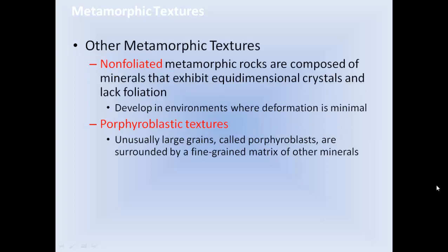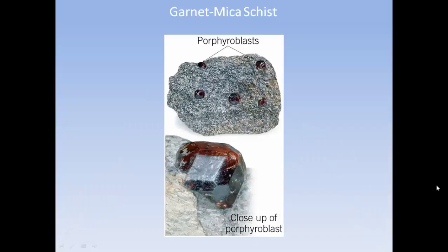Non-foliated metamorphic rocks are composed of minerals that exhibit equidimensional crystals and lack foliation. They develop in environments where deformation is minimal. Porphyroblastic textures: unusually large grains called porphyroblasts are surrounded by a fine-grained matrix of other minerals — for example, porphyroblasts of garnet in a fine matrix.